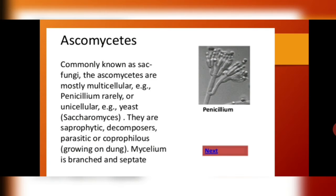Ascomycetes are commonly called the sac fungi. They are mostly multicellular, for example Penicillium, or they can be unicellular like Saccharomyces. They are normally saprophytic in nature, acting as decomposers, and can also be parasitic or coprophilous — meaning they grow on dung. The mycelium of ascomycetes is branched and septate, with proper septa walls present.